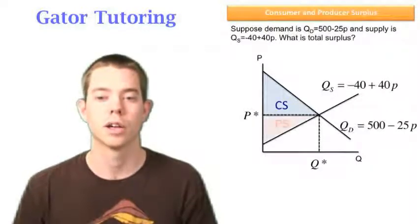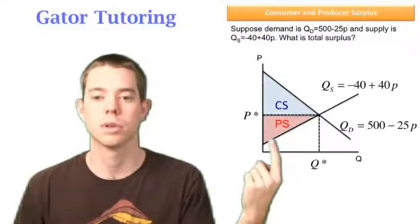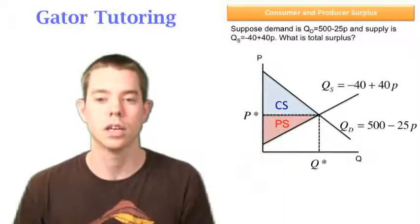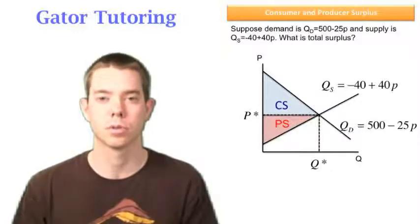This red triangle is producer surplus. Again, we look at that same unit. It only cost us this much to make, but we sold it for that much. So everything below the price and above the supply curve is producer surplus.